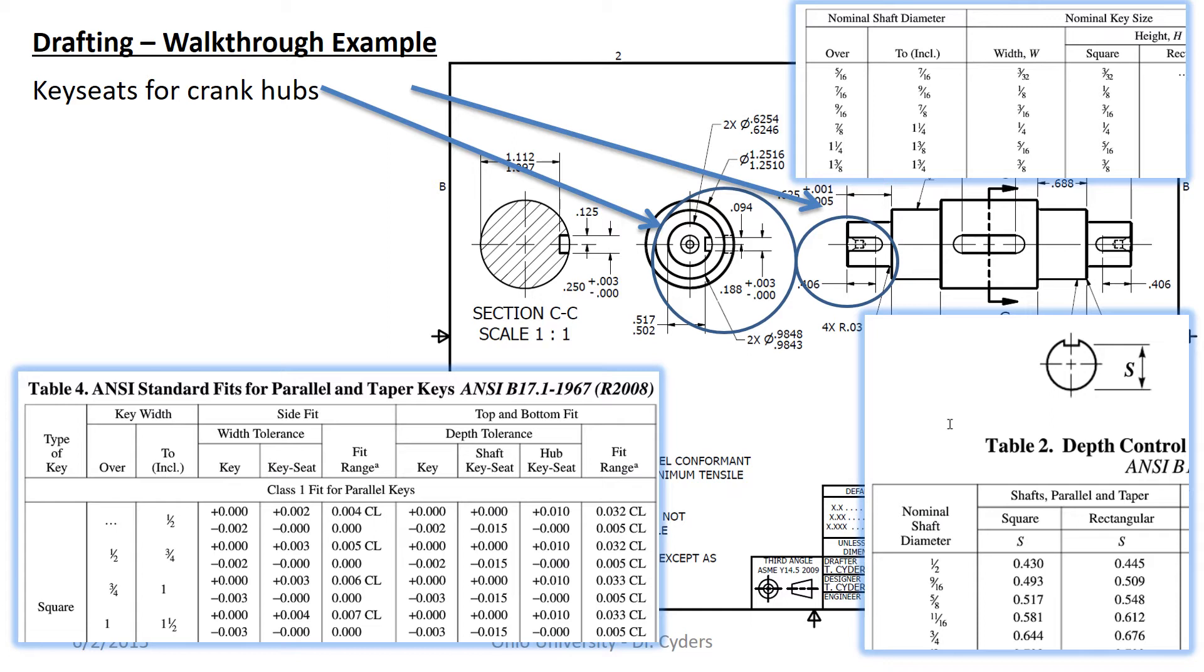Because whether that fits into the hole plus keyway is defined by the stack of this dimension and then the depth of that hole. And so those simply follow again things that are laid out in machinery's handbook. So here are the ANSI standard fits for parallel and taper keys and so I can look in there and get the key seat size which is dependent on the shaft diameter. And I go to my square key, I go to my key width and then get the side fit and top and bottom fit tolerances for the fit range that I'm interested in.